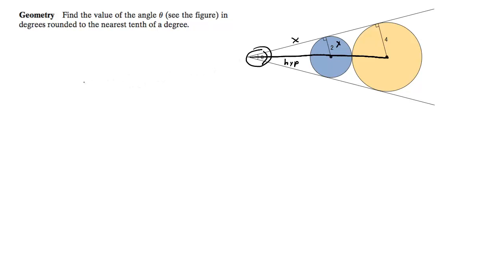For the first circle with this radius of 2, the formula for that is going to be sine of theta is equal to 2 over, I made this y, yeah we'll just call it x. Well the hypotenuse, I'll just call it hypotenuse like this.